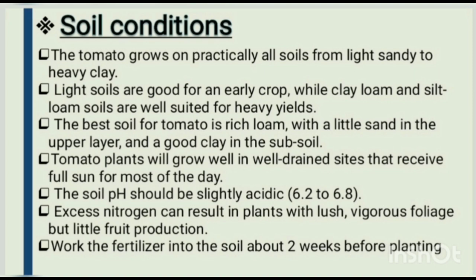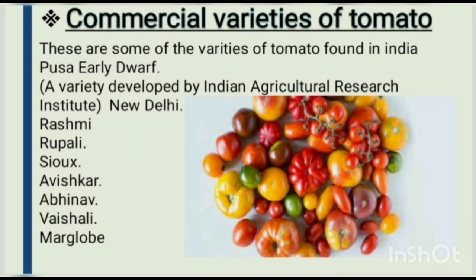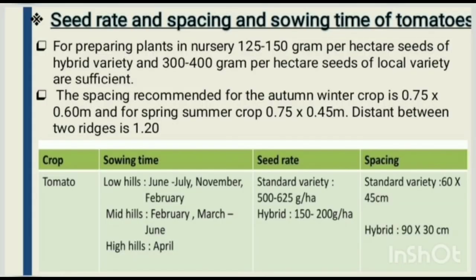Work the fertilizer into the soil about two weeks before planting. Commercial varieties of tomato: some of the varieties found in India include Pusa Early Dwarf — a variety developed by the Indian Agriculture Research Institute, New Delhi — as well as Rashmi, Rupali, Saiox, Avishkar, Abhinav, Vishali, and Marglow.